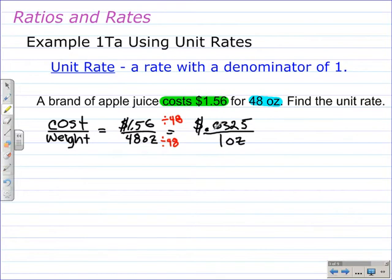We changed $1.56 for 48 ounces to the cost for 1 ounce, which is just over 3 cents. This is 0.03, the pennies placed right here. So our unit rate is 0.0325 dollars per ounce.